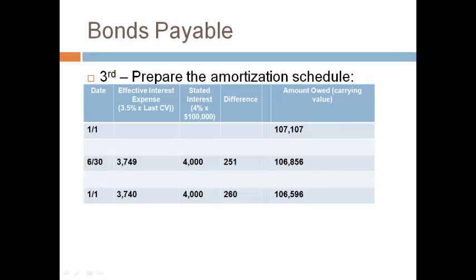The effective interest for 6 months is 3.5%. Multiply 3.5% by $107,107 to get the first 6 months' interest expense. Put the amount of cash that will be paid each period in the stated interest column. Compute the difference and subtract the difference from the amount owed. More cash is paid for interest than interest expense, so the additional amount is subtracted from the amount owed. Remember, the amount owed must move towards the maturity value of $100,000. Repeat the steps for the next January 1st row: multiply 3.5% by the last amount owed on June 30th of $106,856 to get the interest expense for the second 6-month period.